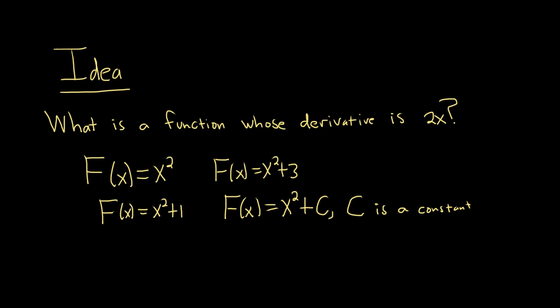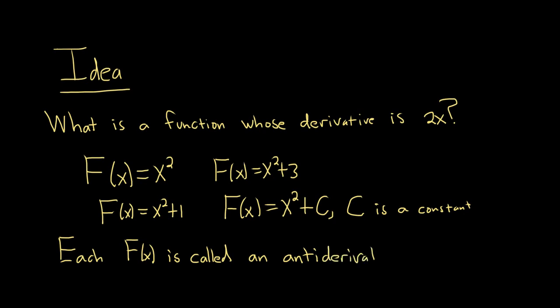There are infinitely many functions where you can take the derivative and get 2x. Each of these big F of x functions has a special name — it's called an antiderivative. So 2x has infinitely many antiderivatives.